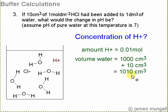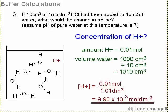Then we added 10 cm³ of the HCl, that small amount, which gives you just over a decimeter cubed, 1010 cm³. So to work out the H+ concentration, amount divided by volume, and that comes out as 9.9 times 10 to the minus 3 mols per decimeter cubed.